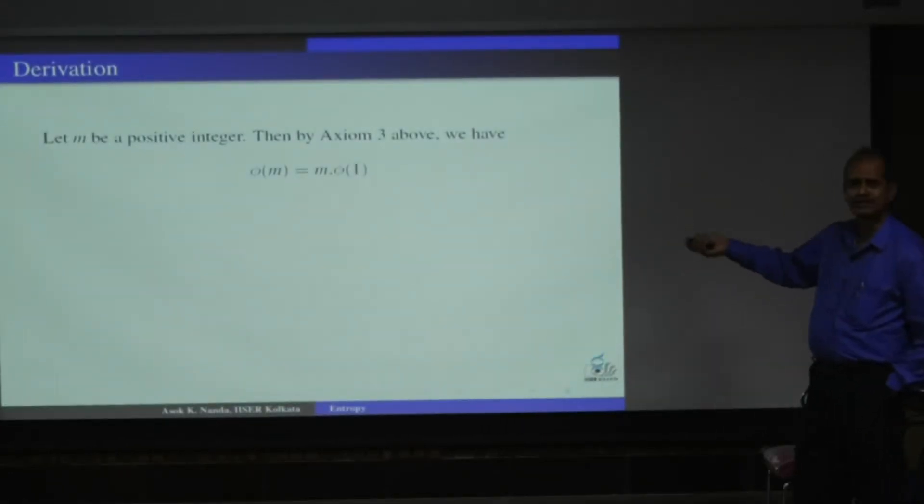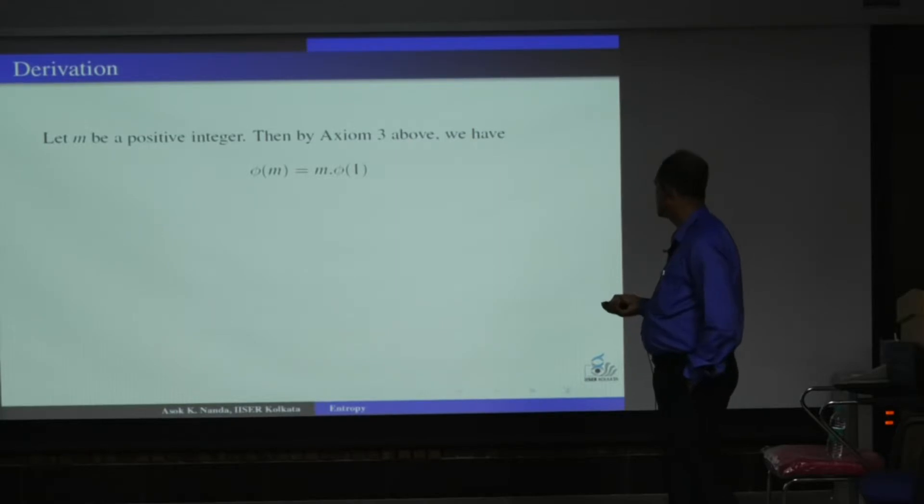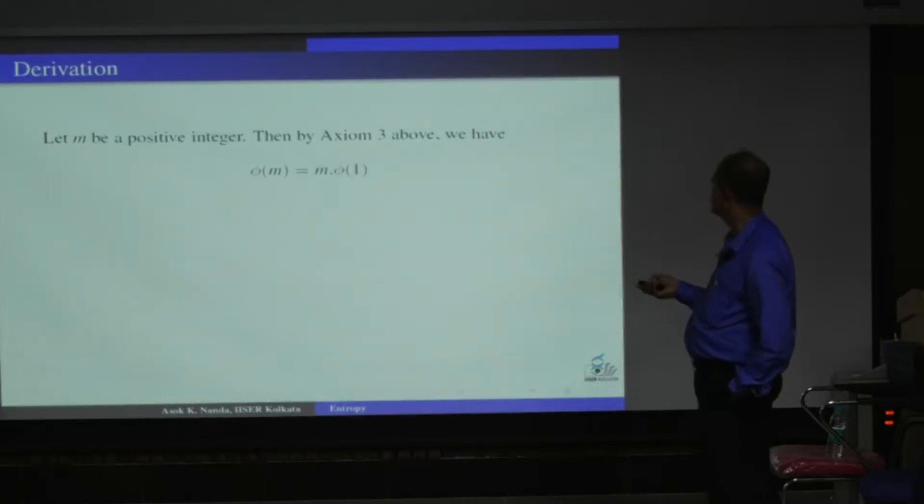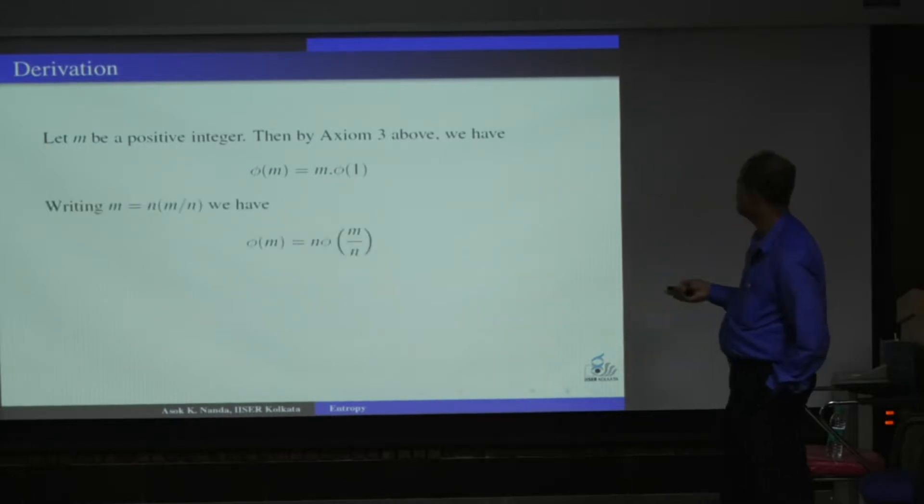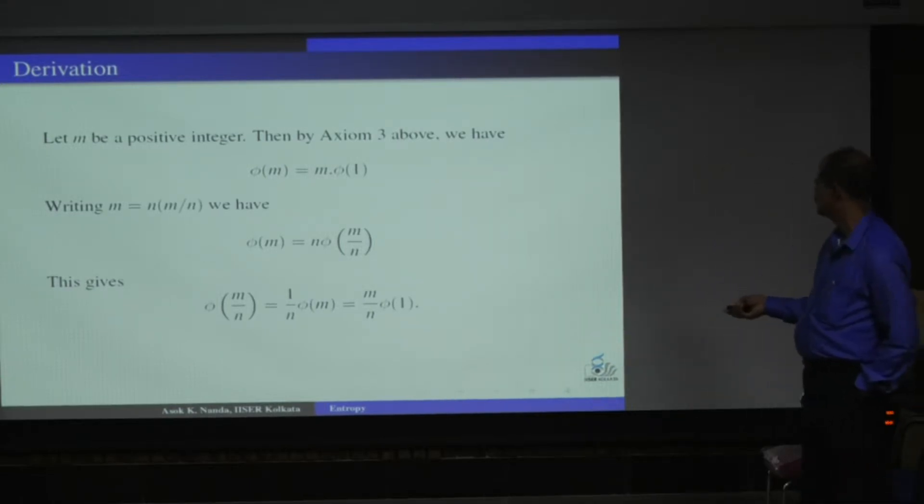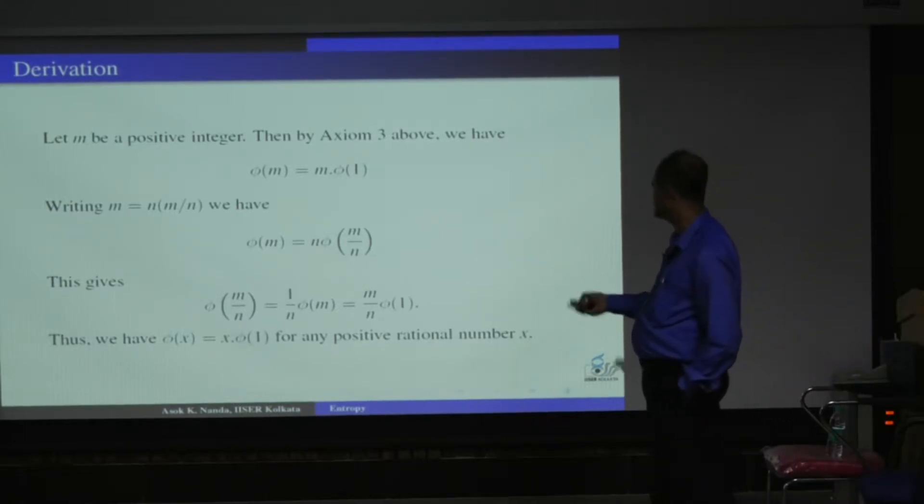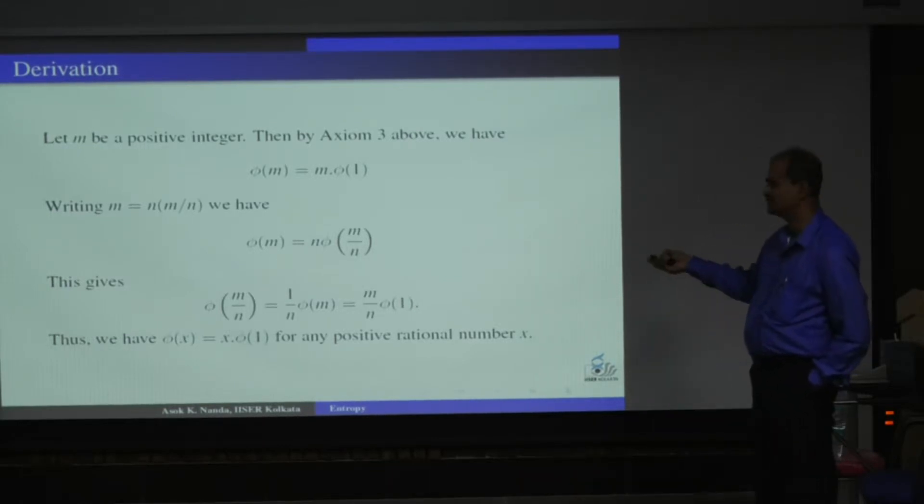I am just quickly trying to tell you this derivation of Shannon's entropy. So clearly, whatever we had here, phi(x1 plus x2) equals phi(x1) plus phi(x2). From here, you have, for any positive integer m, phi(m) will be m times phi(1). So writing m as n times m by n, I can nicely write that phi(m) is n times phi(m by n). So this gives phi(m by n) is m by n times phi(1). So phi(x) is, if I write this m by n as x, so it is phi(x) equals x times phi(1), for any positive rational number. I have taken it in the form m by n.